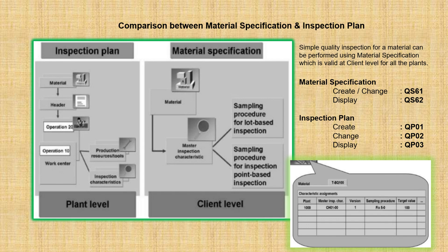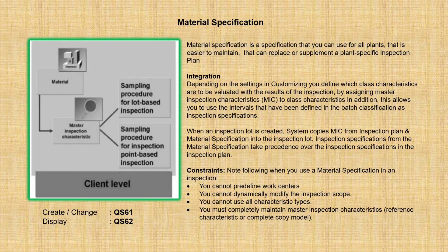We are maintaining material specification at the client level. In a single row, we can add all the things like what MICs are to be tested and what the version is for it. There are a few prerequisites: the MIC which you are assigning in the material specification should be either reference characteristics or a complete copy model MIC.